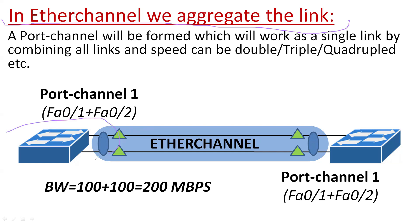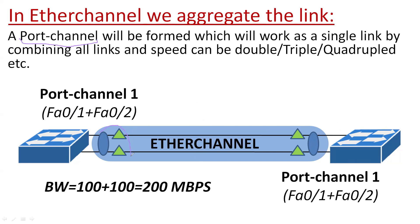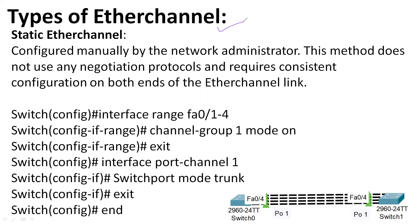In EtherChannel, we aggregate links. For example, there are two switches with two links connected between them, and I need a speed of 200 Mbps. Currently we have Fast Ethernet cables of 100 Mbps. I will create an EtherChannel — when these two interfaces are combined, the single interface is known as the port channel. It follows all protocol procedures as a single link. The total bandwidth after combining the two links will be 100 Mbps plus 100 Mbps, equal to 200 Mbps.